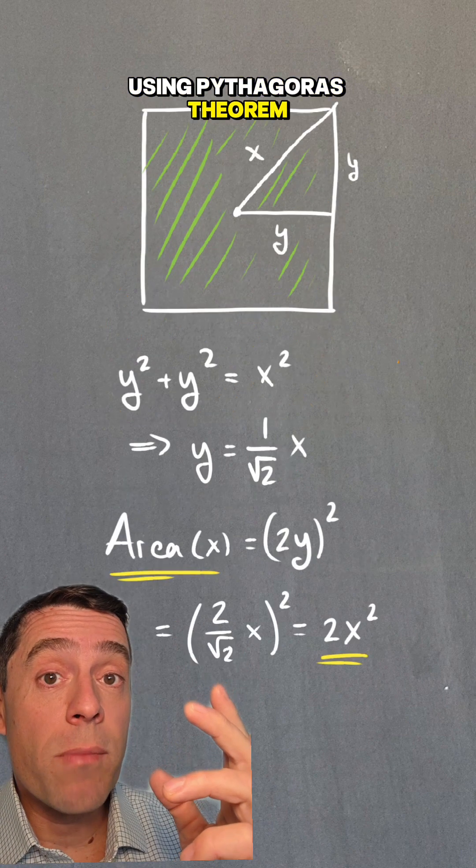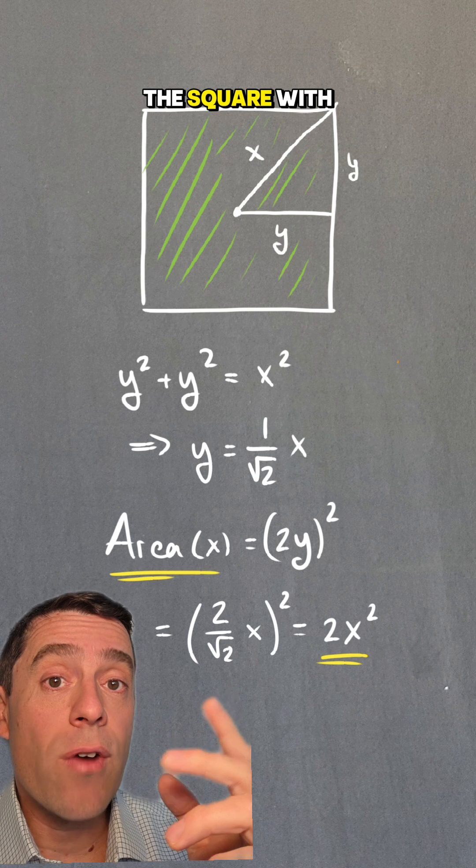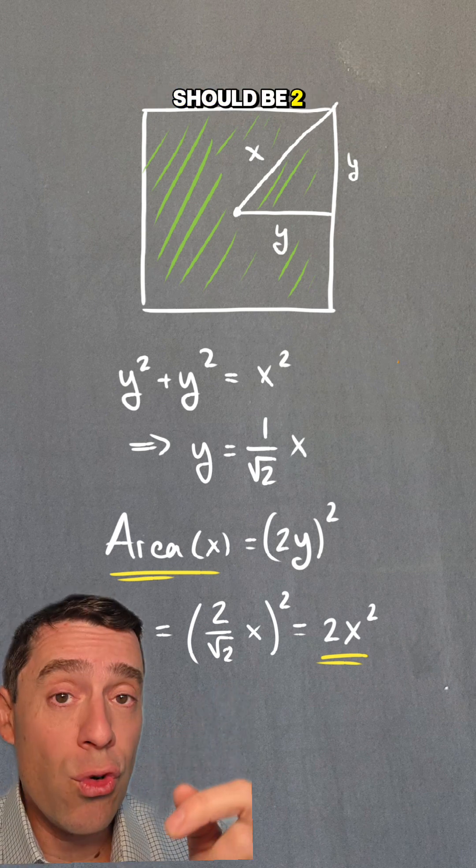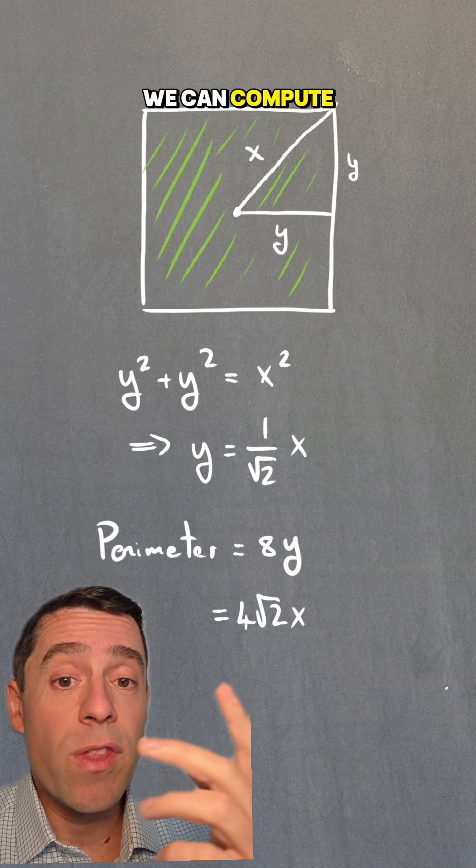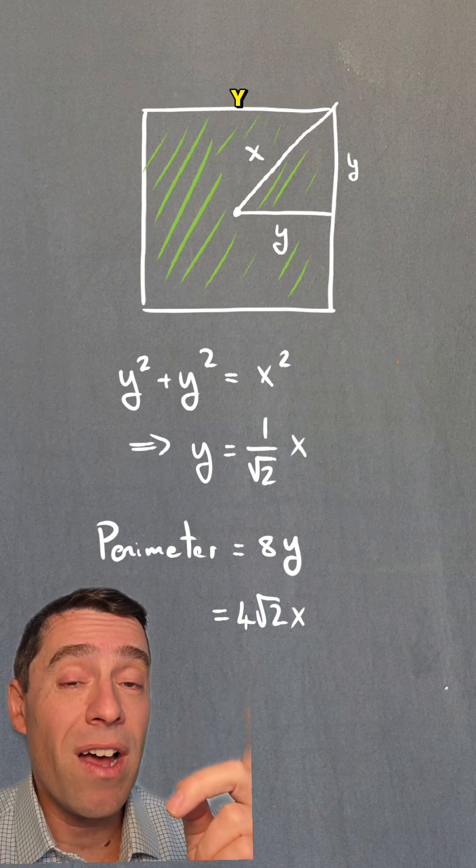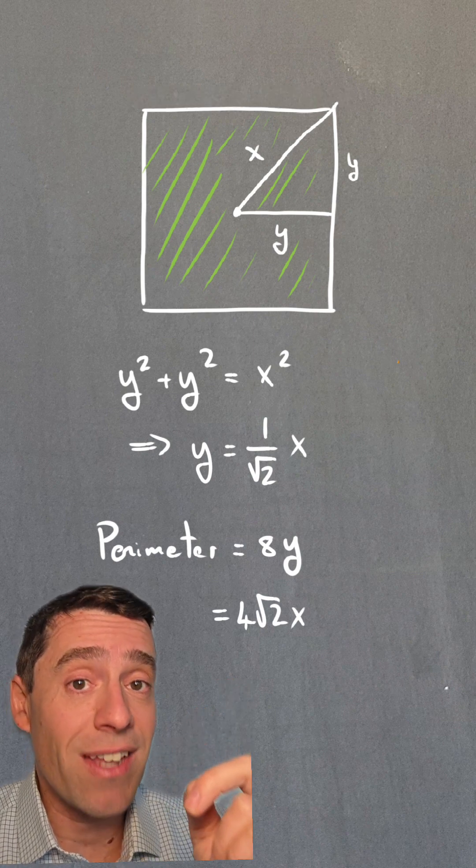Using Pythagoras theorem, we can compute the area of the square with respect to x and the area should be 2x squared. And similarly, again using Pythagoras, we can compute the perimeter to be 4 square root of 2 times x.